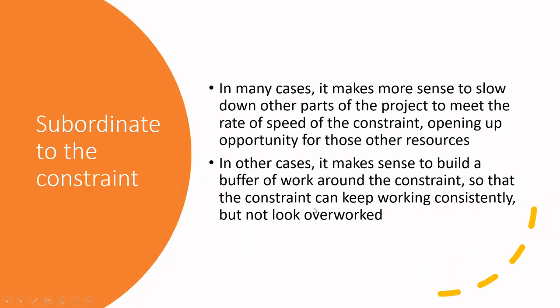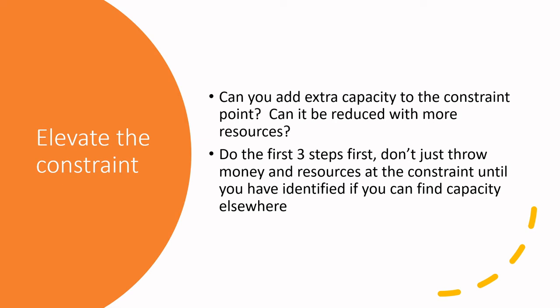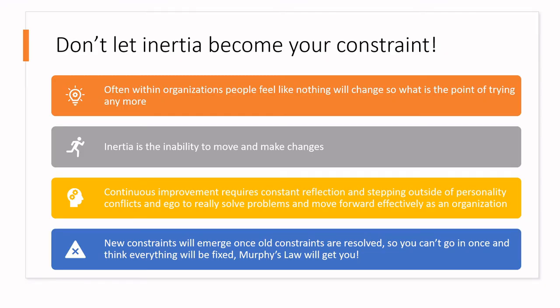Sometimes you can elevate the constraint, and that's where you're adding extra capacity — perhaps buying another machine or hiring another person to minimize the constraint. But always make sure you've done the other three steps first. Don't throw money and resources at a constraint until you've confirmed there's no capacity elsewhere. I've seen it happen where things slow down and people just start buying things, when honestly the most cost-effective solution is sometimes to slow down and wait.